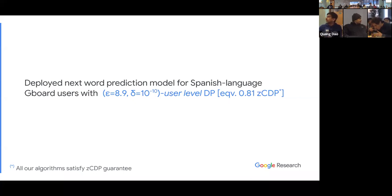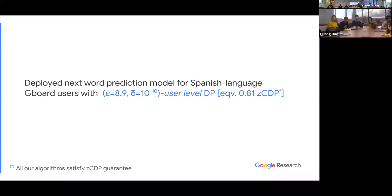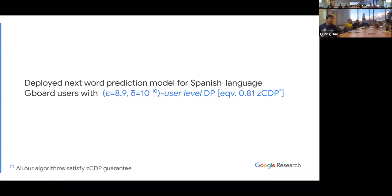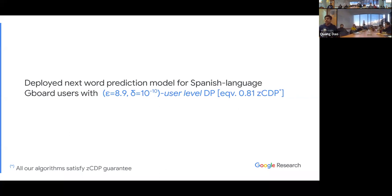What is Gboard? It's a keyboard — it's a keyboard for Android. What is zCDP? zCDP is zero-concentrated differential privacy. It is slightly tighter than epsilon-delta. Delta allows a catastrophic failure — with some probability you can output someone's data. But concentrated differential privacy does not allow that; it's a more nuanced notion of DP.